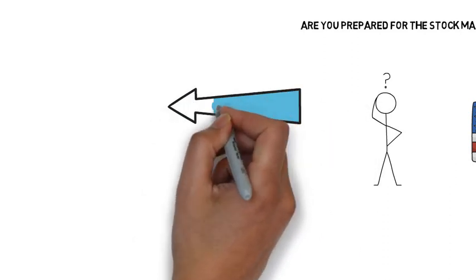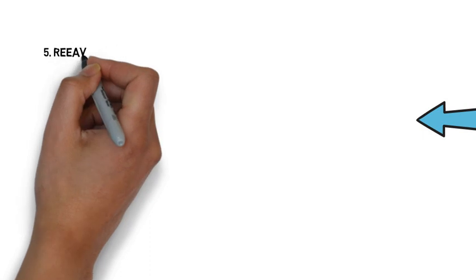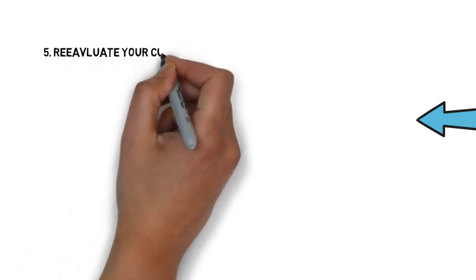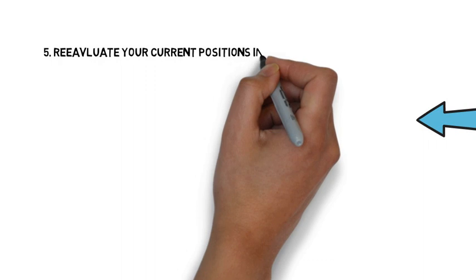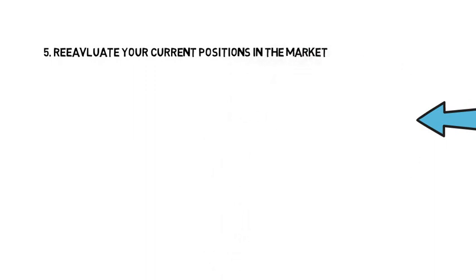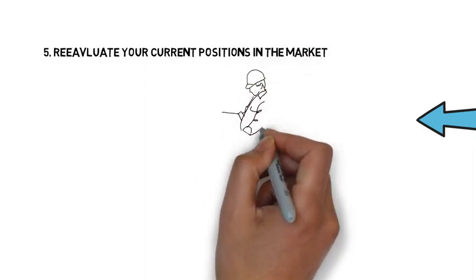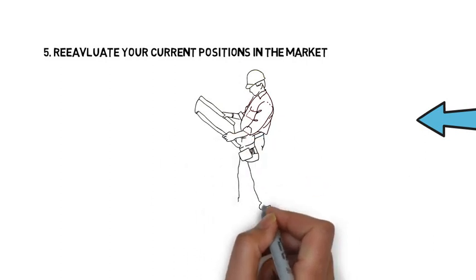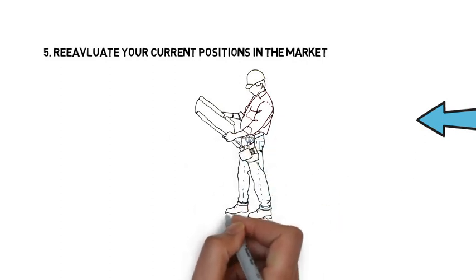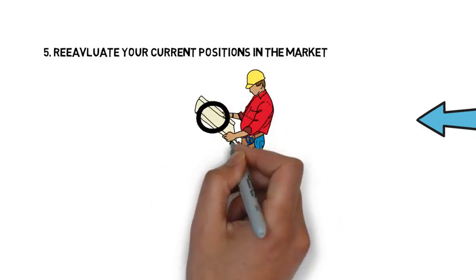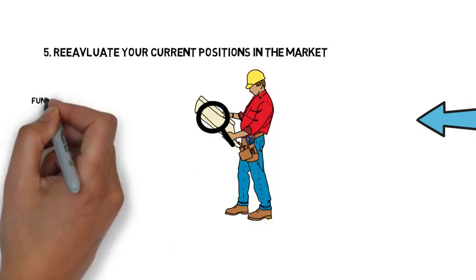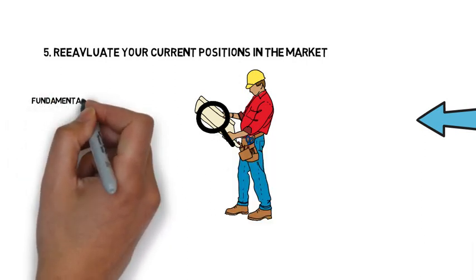Starting at tip number five, you want to re-evaluate your current positions in the market. If you are already an investor or trader and have existing positions in the market, you want to do a complete analysis of each and every stock that you are currently holding. What I mean by complete analysis is looking at each and every stock you are currently having positions in and do the exact research you do before you buy any of these stocks.